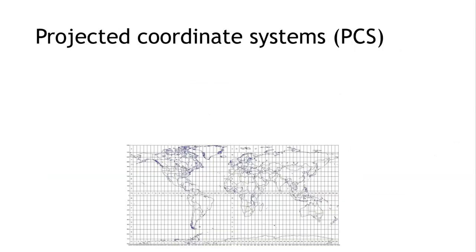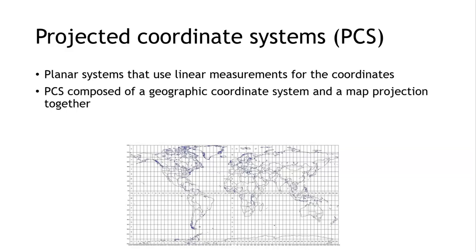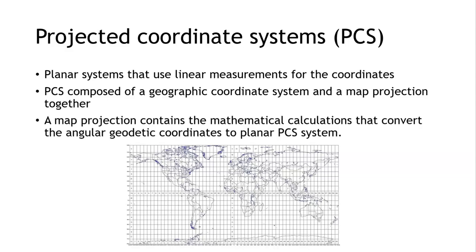When it comes to projected coordinate systems, they are planar systems. They convert a spherical coordinate system to a planar coordinate system and they involve linear measurements of the coordinates. PCS is composed of a geographic coordinate system and a map projection together.